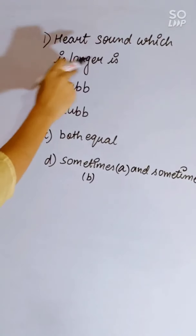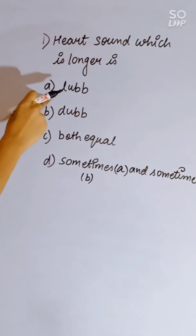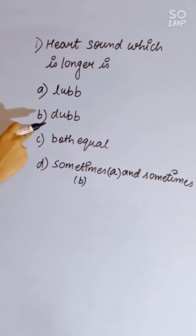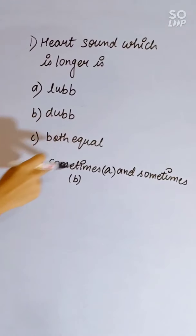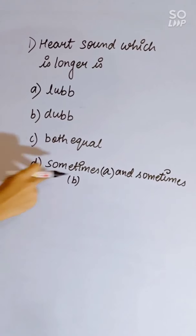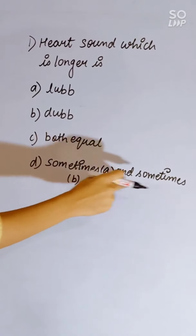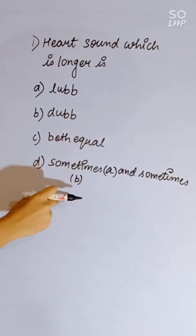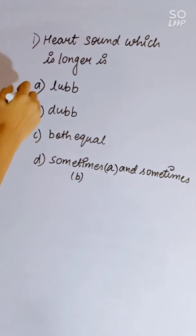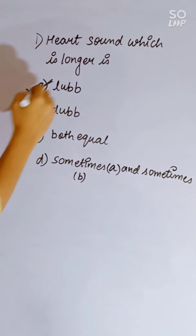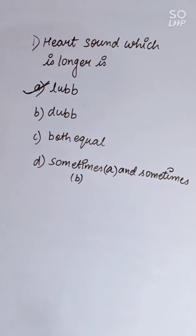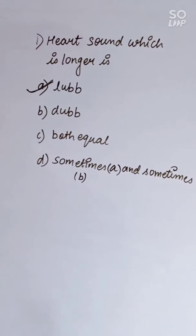Which heart sound is longer — lub or dub? Options: lub, dub, both equal, or sometimes A and sometimes B. Correct answer is lub. The lub sound is produced due to the closure of the tricuspid and bicuspid valves.